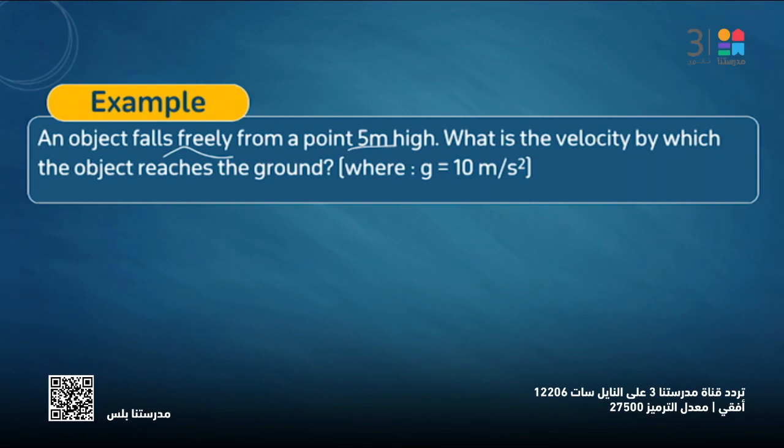What is the velocity by which the object reaches the ground? G equals 10 meters per second squared. Now we are experts. We can solve the problem with kinetic energy.